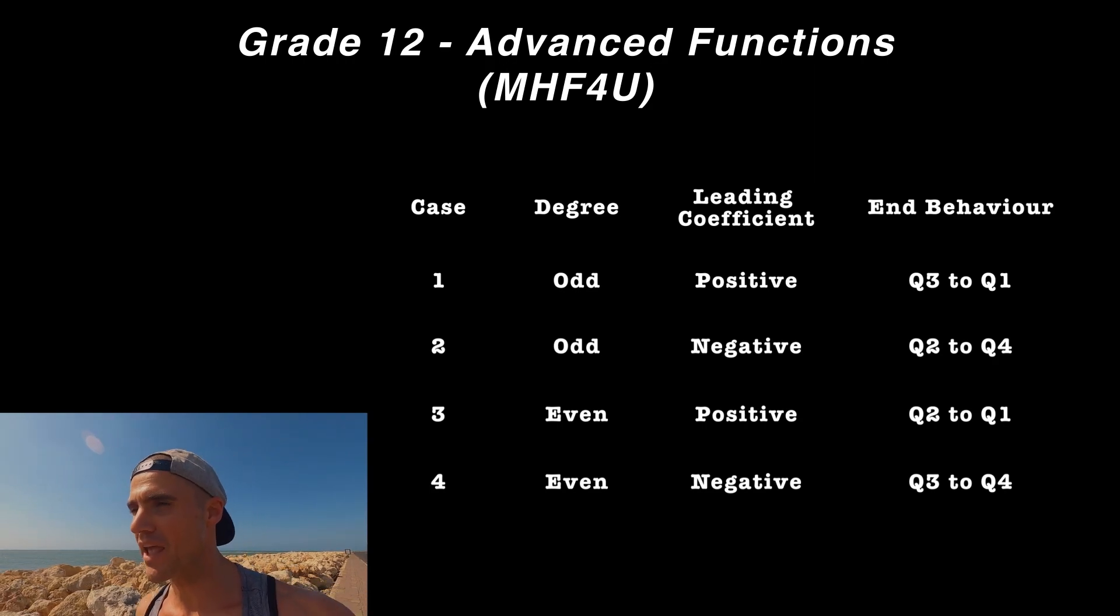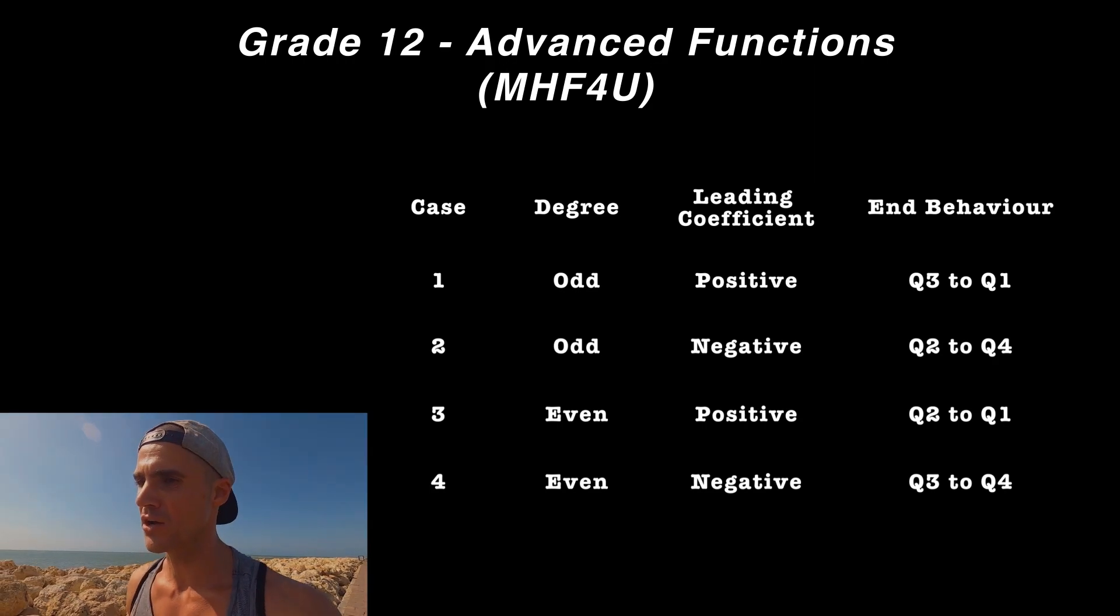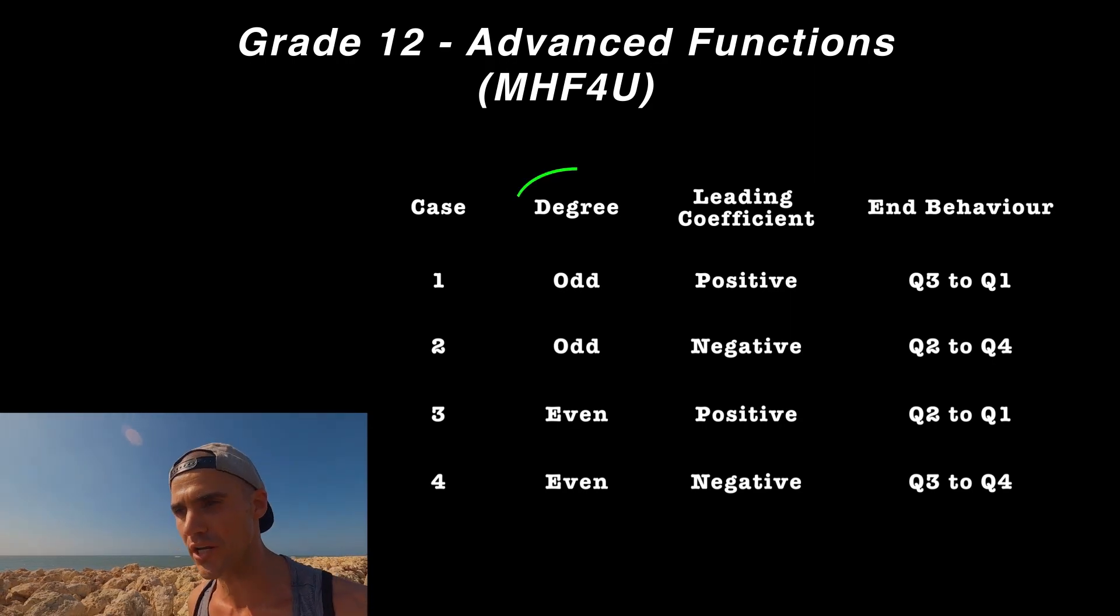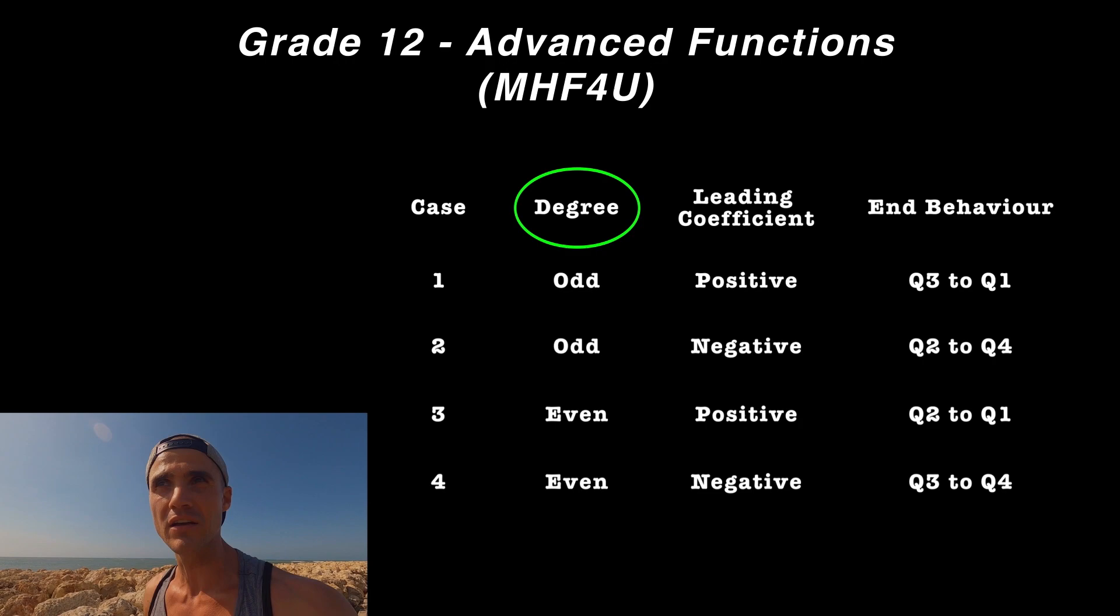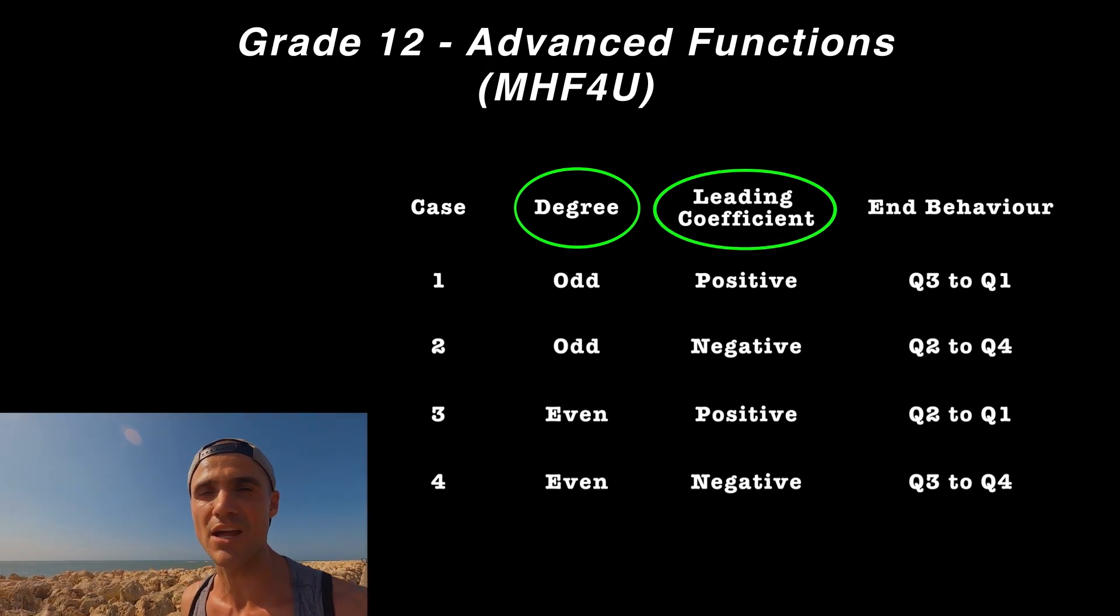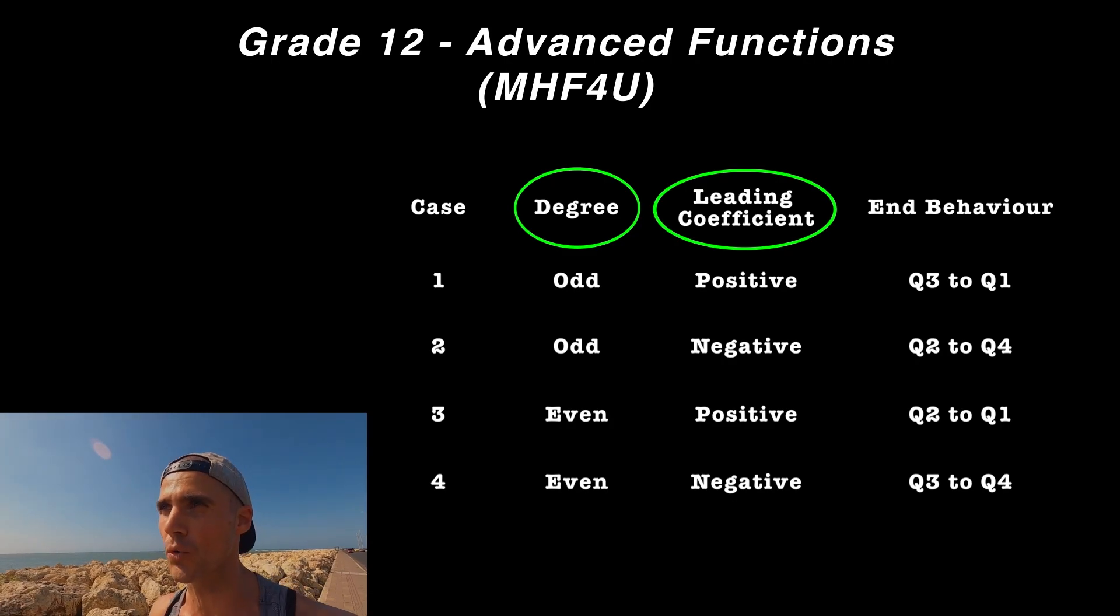Remember that the end behavior of a polynomial depends on two things: whether the degree is even or odd, and whether the leading coefficient is positive or negative. That tells you which quadrants we're going to.